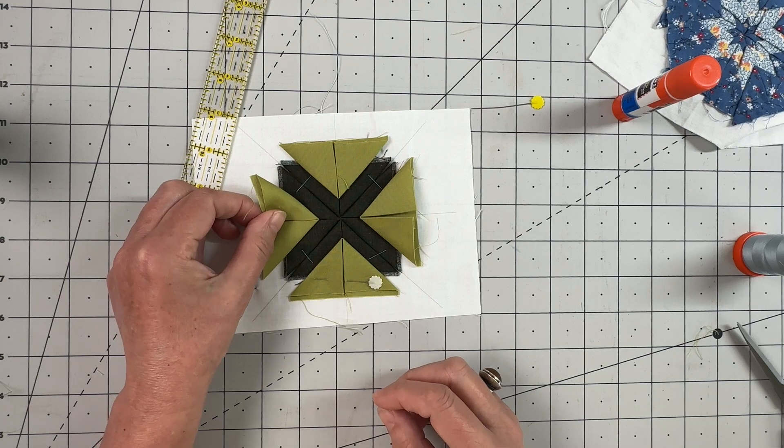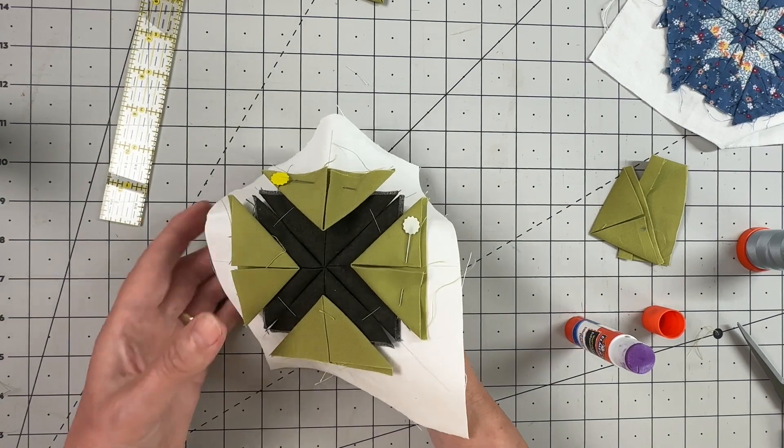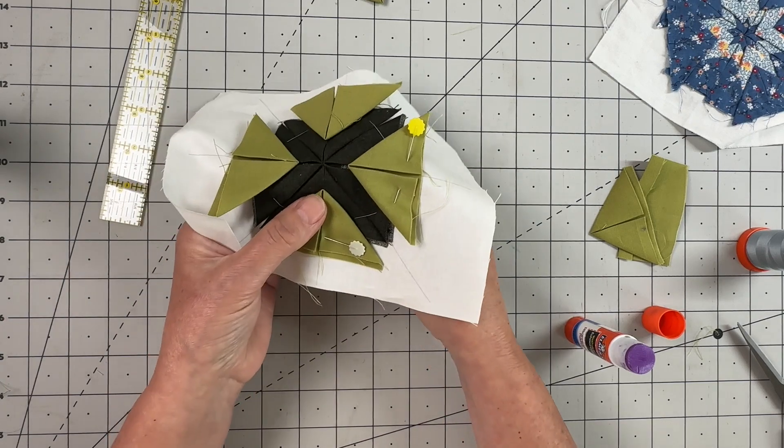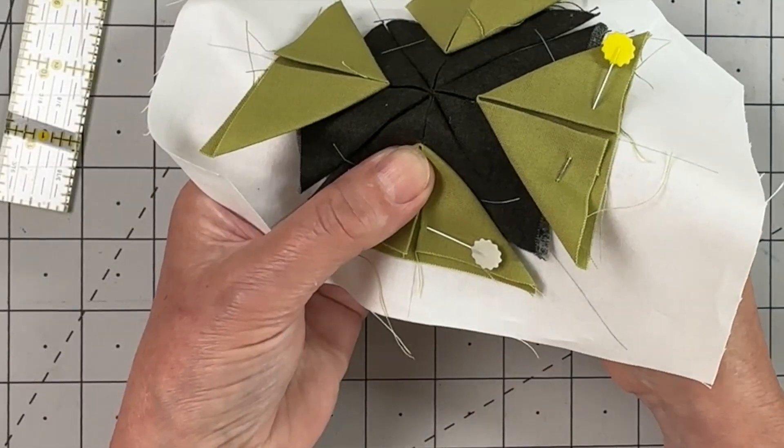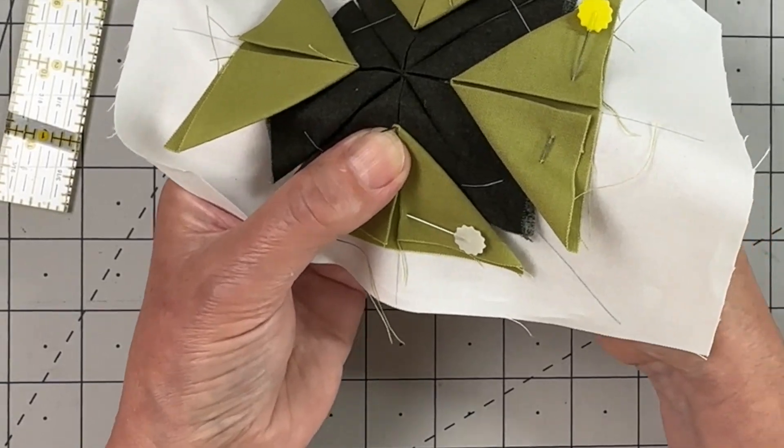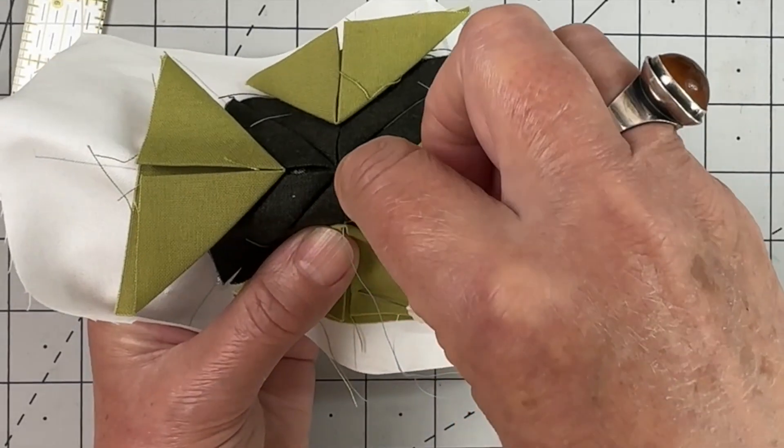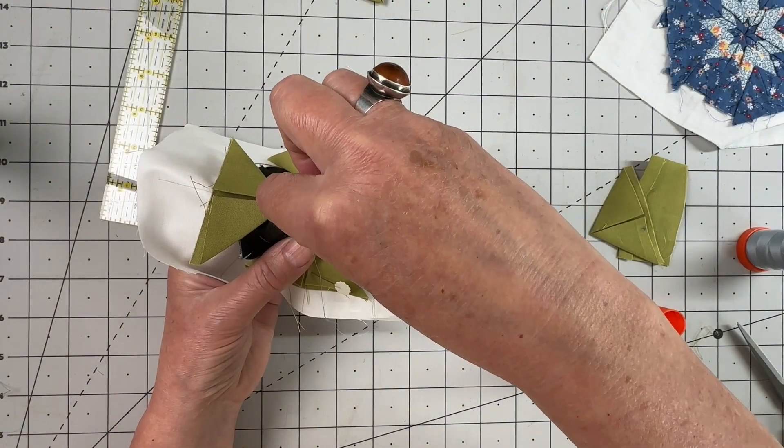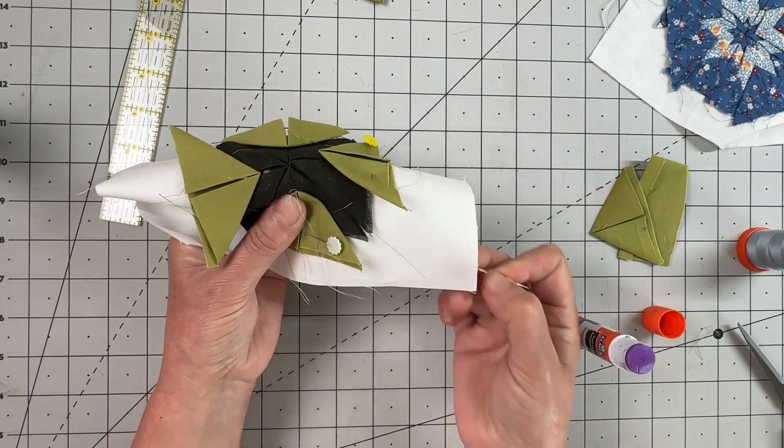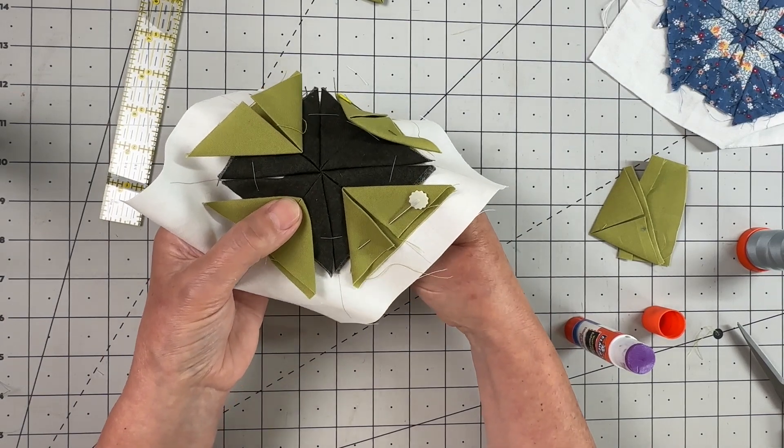You can then take your needle and bring it up and catch your first one. You're going to come up between those two folds and just catch a few threads on that point, and then go back down again, trying to roll it under so it's out of the way. Work your way around catching all four points in place.